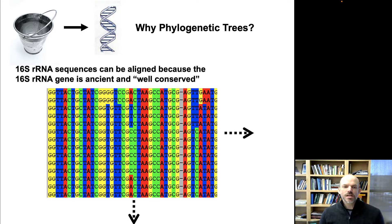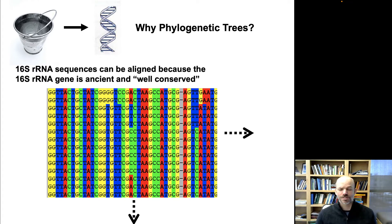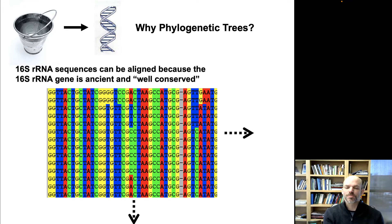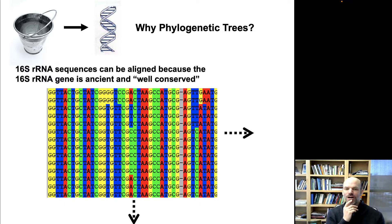Often when we do 16S sequencing studies — sequencing a single taxonomic marker gene — the output in a published paper is a phylogenetic tree. A lot of people really do not like phylogenetic trees; they tend to be very ugly figures and not much fun to look at, especially if you don't care about microbial taxonomy and it's full of Latin names you don't know. I want to spend a few minutes explaining why we make these phylogenetic trees even though most people, microbiologists included, often hate them — but they're really really useful.